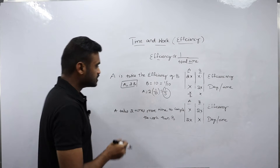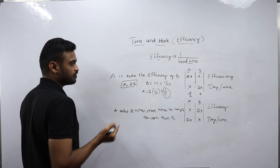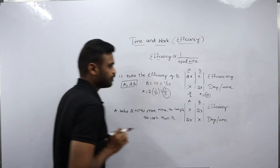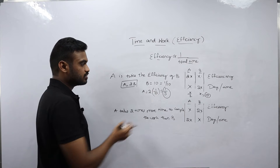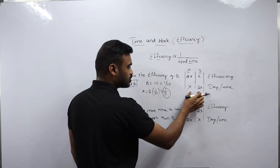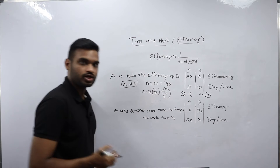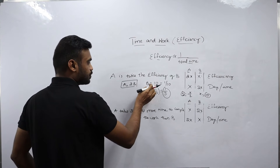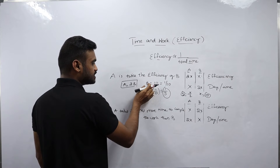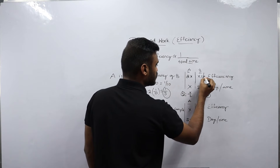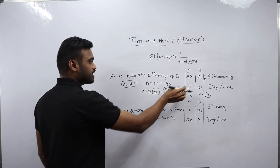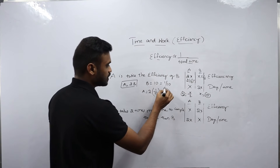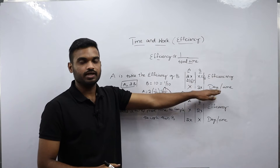Now I will verify with the second example. Consider B takes 20 days to complete the work, so A takes 2 times 20 equals 40 days. Substituting x equals 20 into the time formula 2x gives 40 days for A. B's efficiency is 1 by 20. A's efficiency should be x equals 1 by 40, which we get by sending the 2 to the right-hand side: 2 times x equals 1 by 20, so x equals 1 by 40. A's efficiency is 1 by 40, confirming A takes 40 days.